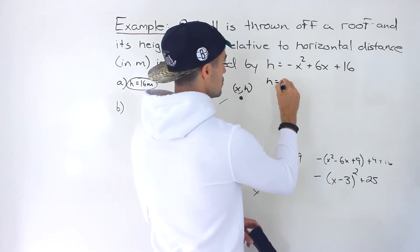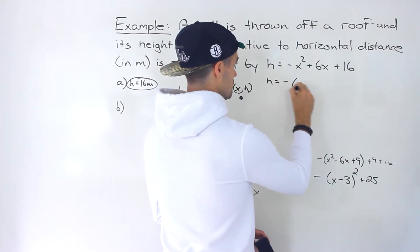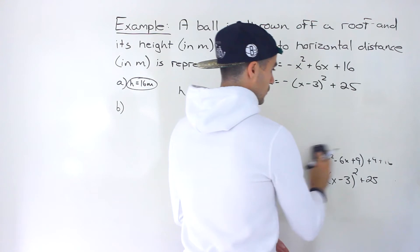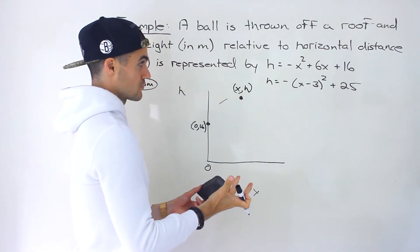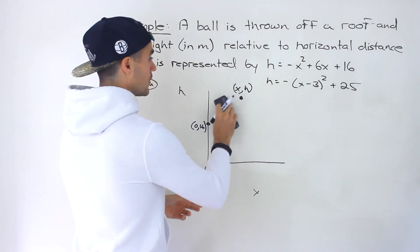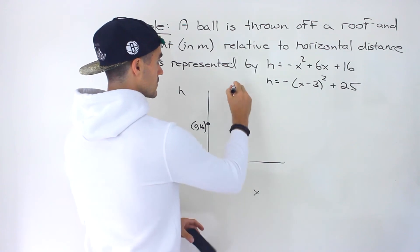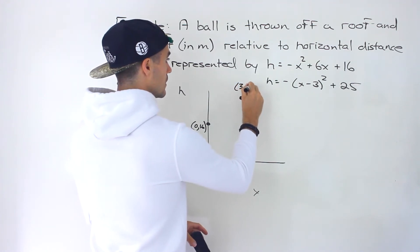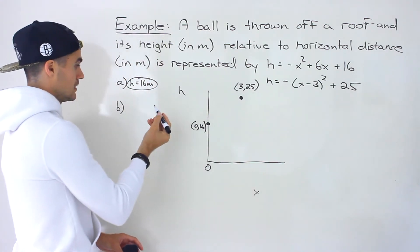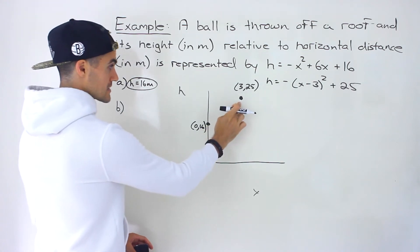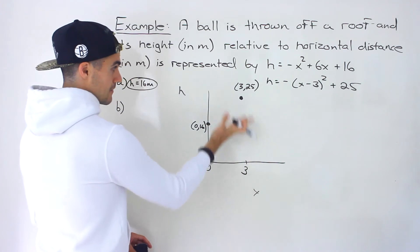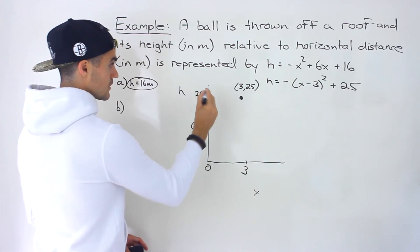And what's nice about this format, we can get the vertex directly. Notice that it's going to be 3 and 25. That's going to be the coordinates of the vertex right here. So we got 3 and then we got 25. So that actually answers part B. So the horizontal distance where the max height is occurring - it's traveled a horizontal distance of 3 meters and the max height is 25 meters.